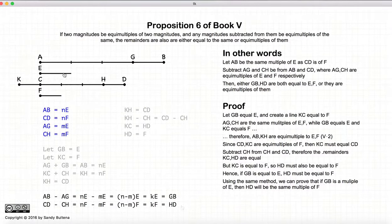And that is the proof that if we start with equal multiples of E and F, we subtract equal multiples from both lines, the remainders will also be equal multiples of E and F.